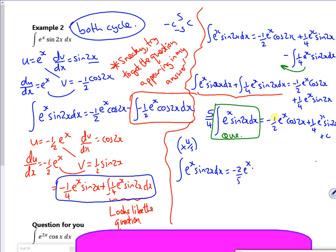e to the x cos 2x, and then if I multiply by 4 fifths, I've got 4 over 20, which is 1 over 5, e to the x sin 2x, and my constant's just a constant.